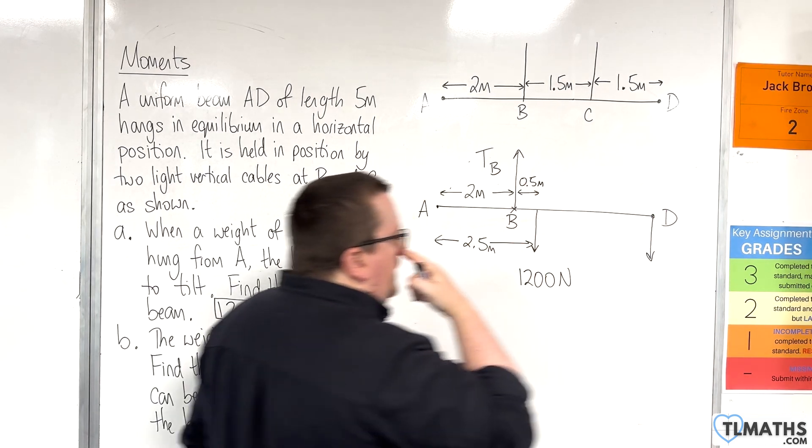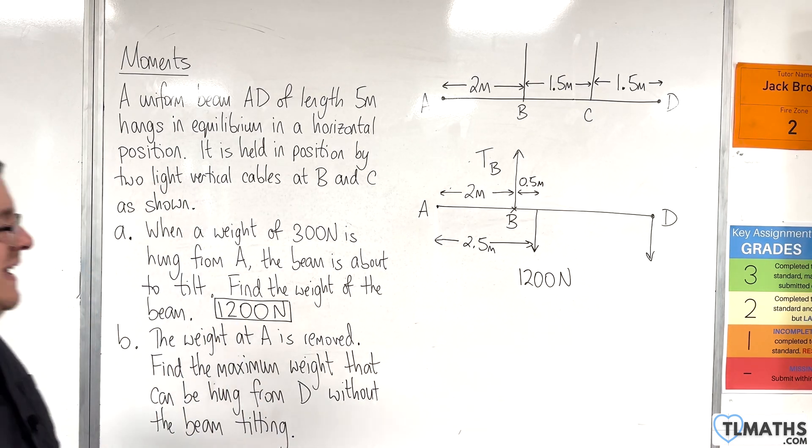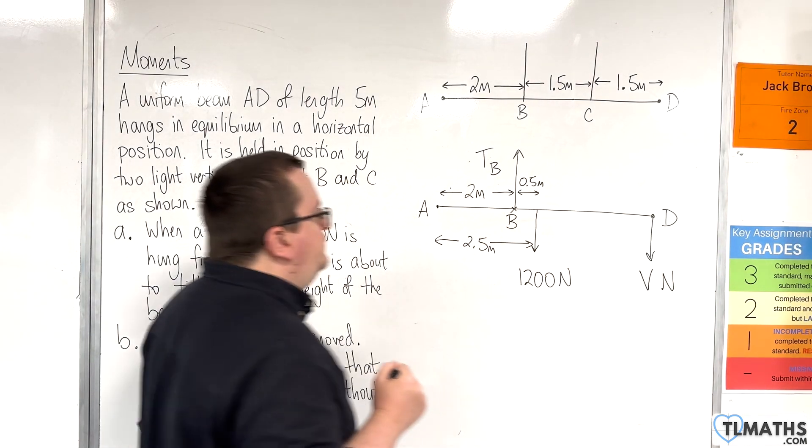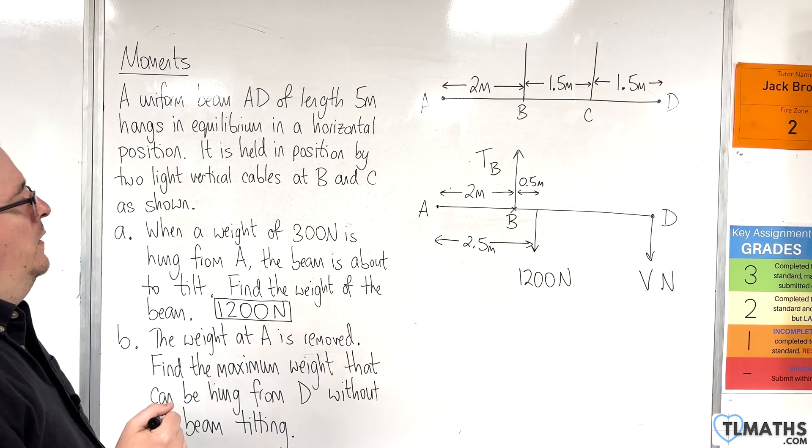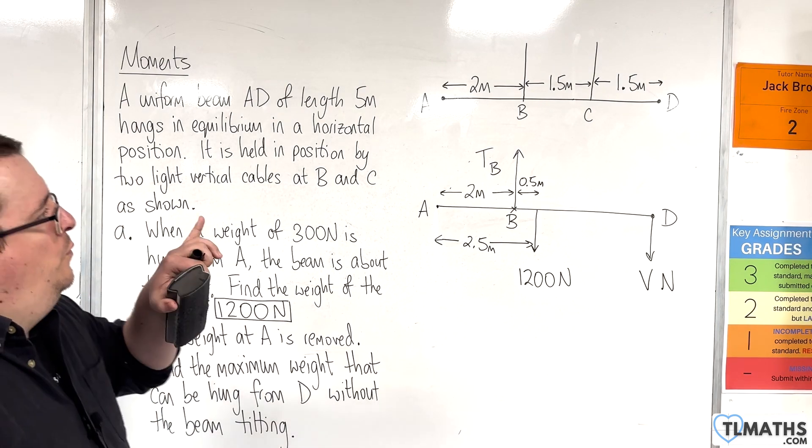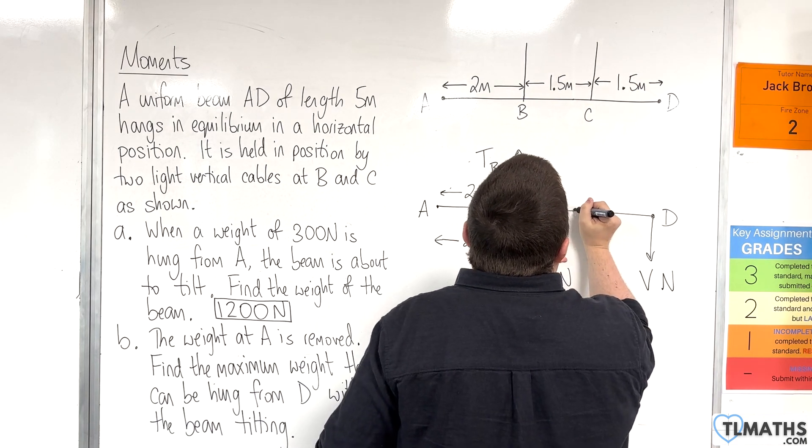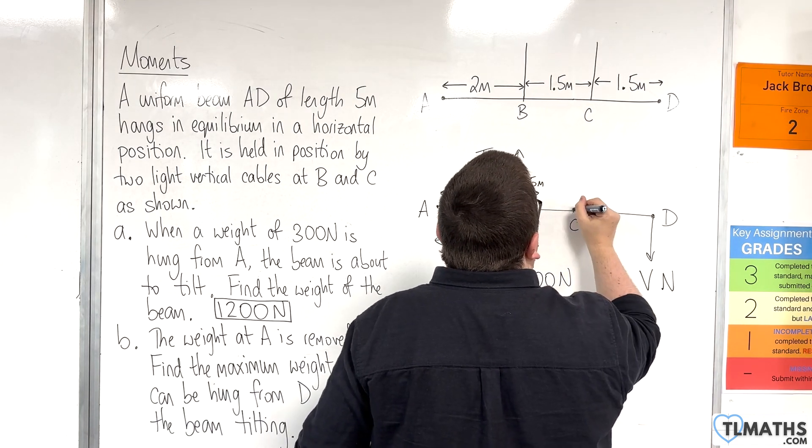So we're going to be hanging a weight at D. Should we call that V? Why not? V newtons. Okay. Now, because the situation has changed, we've now got the tension at C. So let's bring that back in. So here's C. And we've got a tension at C.